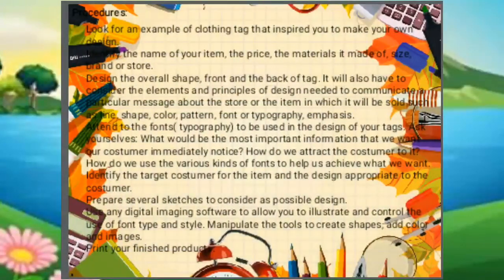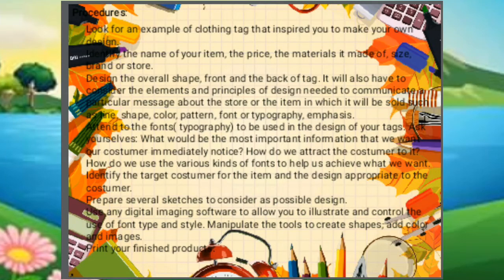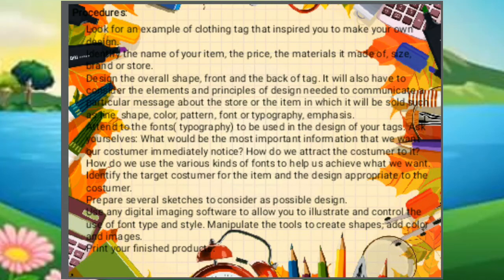Here are the steps for making a clothing tag poster. Number one: look for an example of a clothing tag that inspired you to make your own design. Number two: identify the name of your item, the price, the materials it is made of, size, brand, or store. Number three: design the overall shape, front, and back of the tag. You will also need to consider the elements and principles of design needed to communicate a particular message about the store or item, such as line, shape, color, pattern, font or typography, and emphasis.